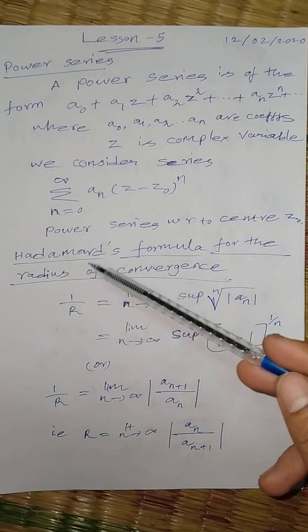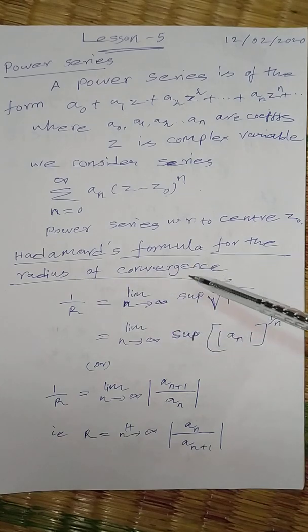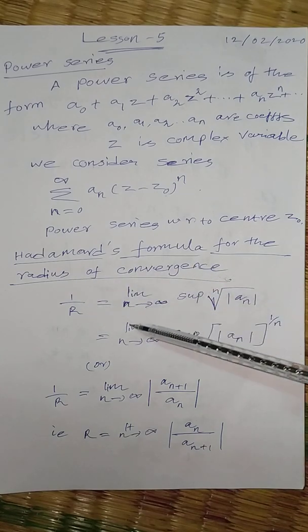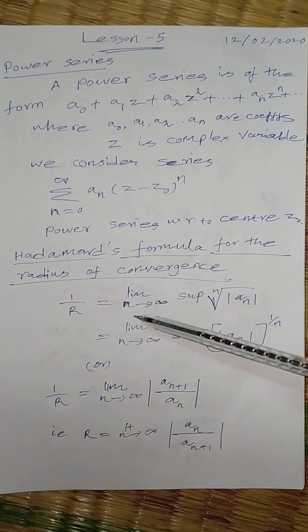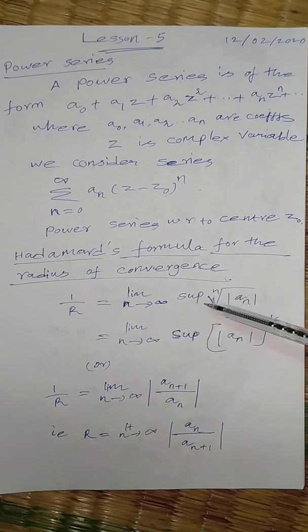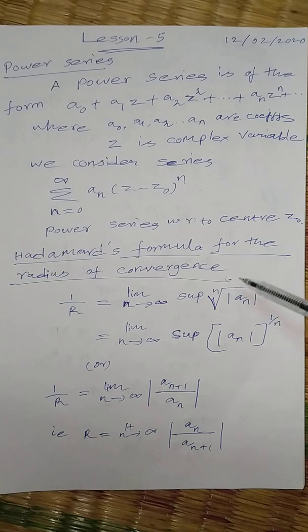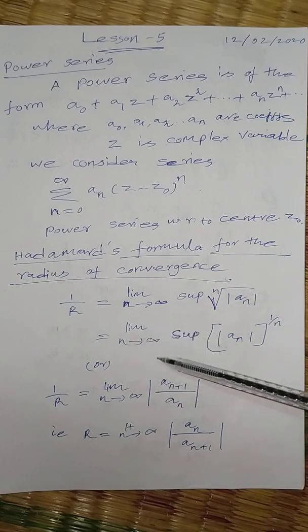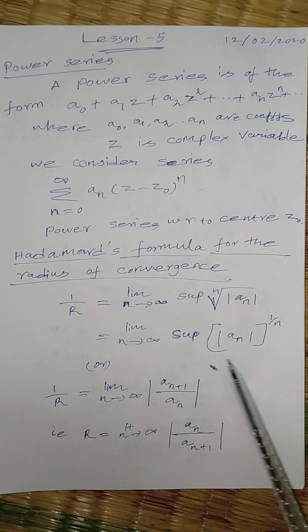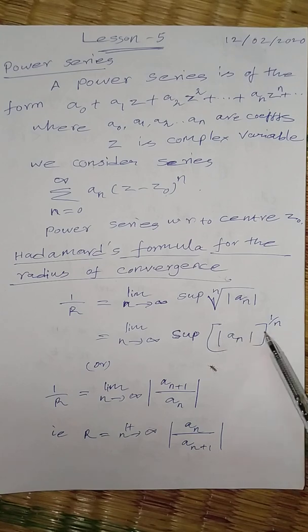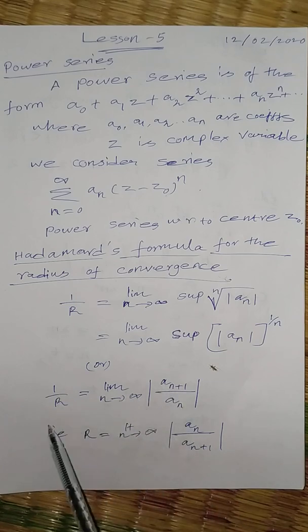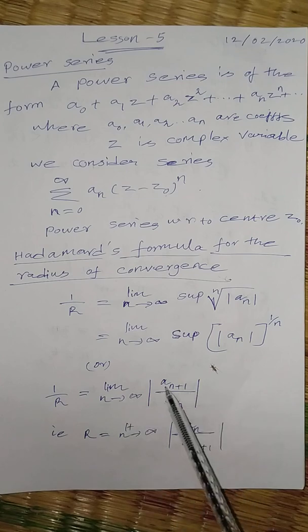The well-known formula, the Hadamard's formula for the radius of convergence, is 1 by r equal to limit n tends to infinity supremum square root of n, that is modulus of An, which is equal to limit n tends to infinity supremum modulus An whole power 1 by n.